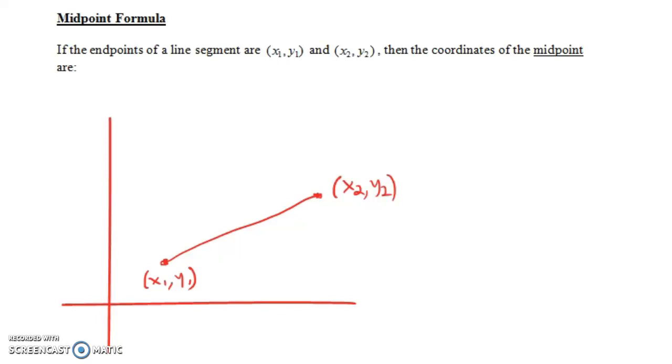In this video, we're going to talk about how to find the midpoint between two ordered pairs. If you notice, I've labeled two ordered pairs here: (x1, y1) and (x2, y2). And the question is, what's the point that's halfway in between these two points?